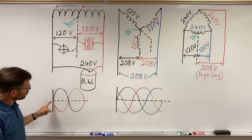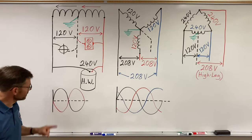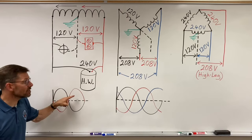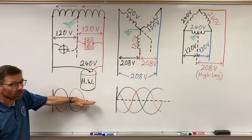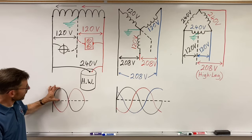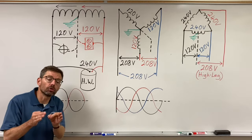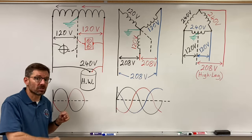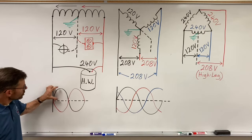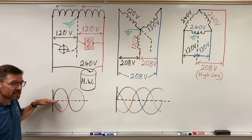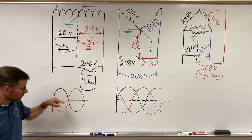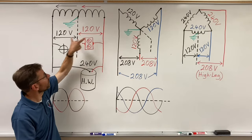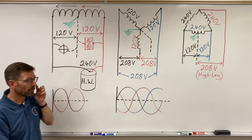I drew the sine waves for this — the sine wave for the black wire and the red wire, both measured relative to the neutral. I have 120 volts RMS — root mean square — not peak voltages. Everything I'll discuss is RMS. Black wire relative to neutral is 120 volts, and red wire relative to neutral is also 120 volts.